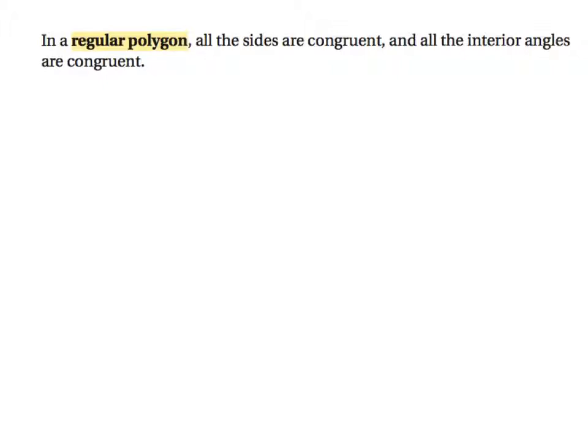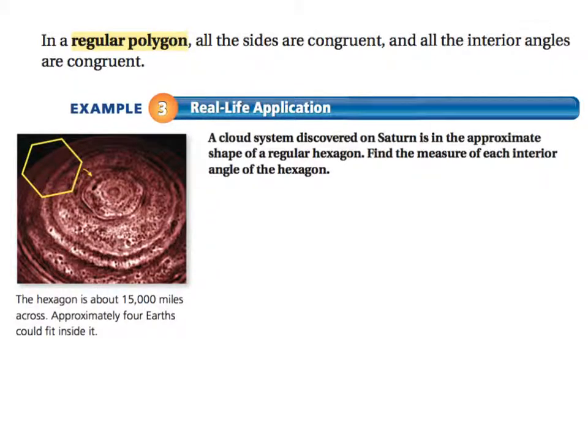In a regular polygon, all of the sides and all of the interior angles are congruent. So if I say a regular quadrilateral, that would be a square. If I said a regular triangle, that would be an equilateral triangle. You're going to be learning that a lot and then using it a lot in 8th grade.